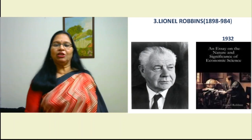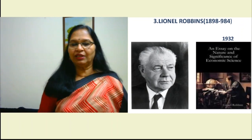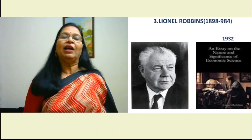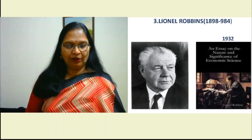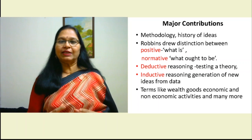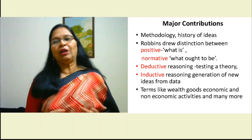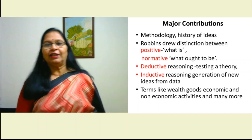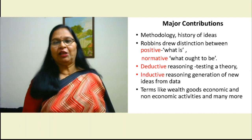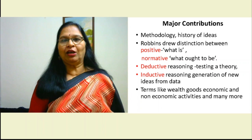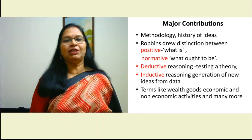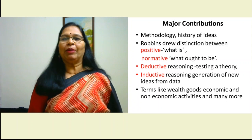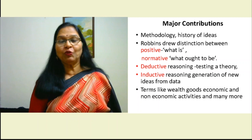The next important economist is Lionel Robbins, 1898 to 1984, who wrote his book An Essay on the Nature and Significance of Economic Science in 1932. Each writer adds to the existing writer's ideas, and Robbins continues with the ideas of Smith and Marshall. His main contribution is on methodology — how do we study economics — and he introduced terms like positive and normative economics, and inductive and deductive reasoning. These can become confusing for new learners if introduced all at once.